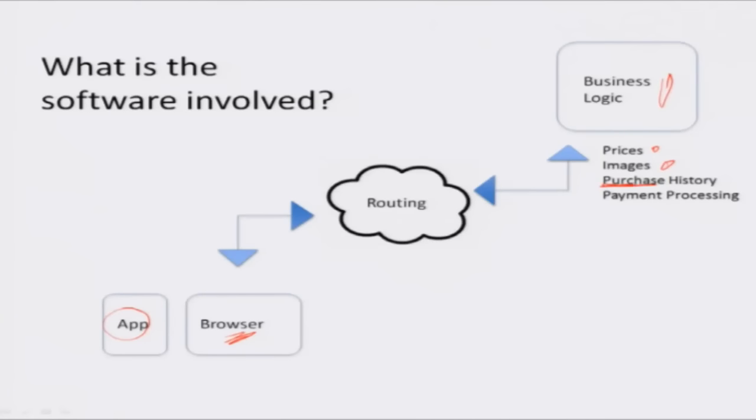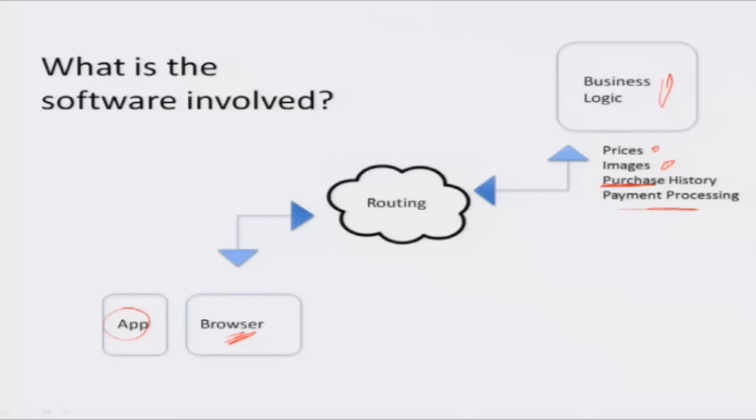So it's keeping information like prices, images, purchase history. You might have bought other things before, or some people might have bought some other things. They won't tell you the names of the people, but they can tell you purchase history. Person who has bought this has also bought this, it may be of interest to you as well. Then it has to do payment processing and so on. So all this data or information is sitting in the server and is being managed by the business logic.